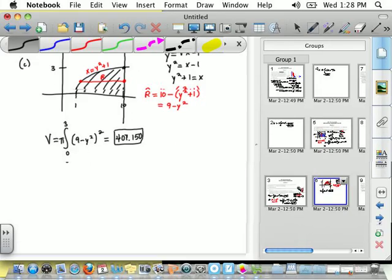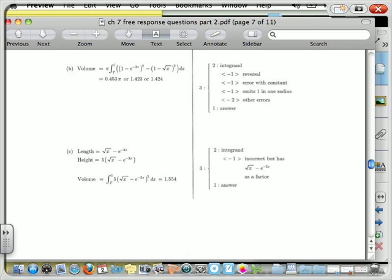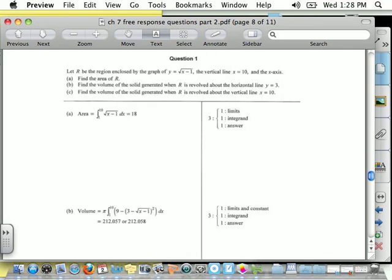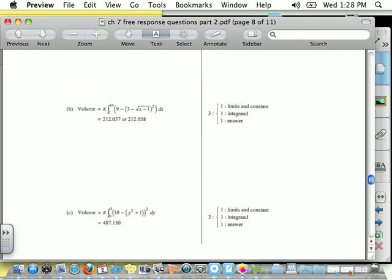Okay, so let's see where we had our points on this one. So on part A, we got a point for having the limits correct, so 1 to 10. One point for having the square root of x minus 1. One point for your answer of 18. On the next one, we had one point for having the limits and constants, so 1 and 10, and then pi. One point for having the inside part correct, the integrand. One point for your answer. And on the last one, we had one point for having your limits and constants correct. One point for the inside part, the integrand. One point for the answer. Okay, so we got all 9 points on that problem.